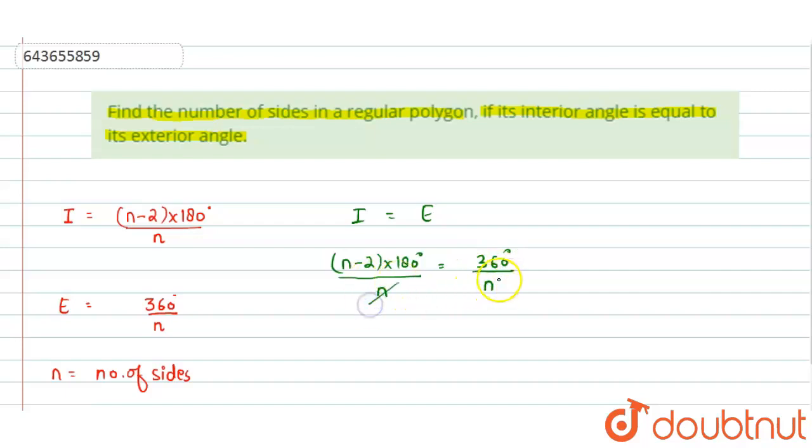Now we can cancel this n by this n, and also we can cancel this 360° by this 180°, and this will be 2 here. Finally, we will get n-2 = 2, and from this we will get n = 4.